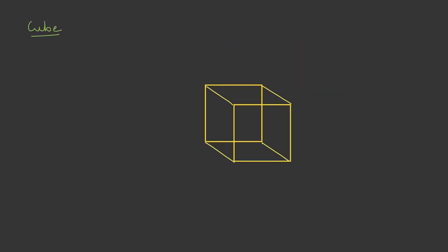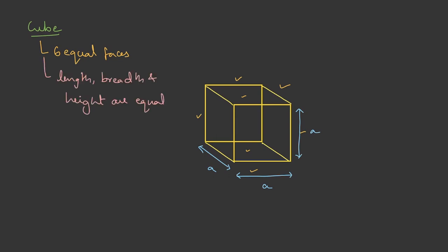A cube can be thought of as an extended square. It has six equal faces — this side, this one, the bottom, and the top — all sides are equal. If I take the length as 'a', the breadth is also 'a', and even the height is also 'a'. So for a cube, the length, breadth, and height are all equal.